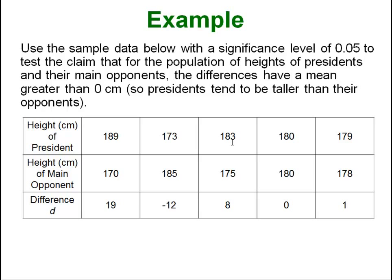So 189 minus 170 got you a difference of 19, meaning the president was 19 inches taller in that case. Then in the next instance the president was actually 12 inches—sorry these are in centimeters—19 centimeters taller and the next one was 12 centimeters shorter, 8 centimeters taller. They were the same and then 1 centimeter taller.